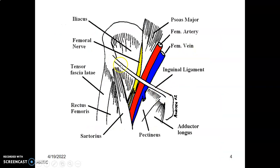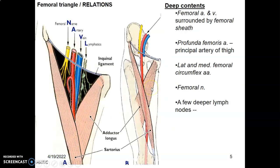The inguinal ligament runs from the anterior superior iliac spine to the pubic tubercle. Sartorius forms the lateral border and adductor longus forms the medial border. From lateral to medial: femoral nerve, femoral artery, vein, and lymphatics. The nerve is not within the femoral sheath; the rest are within the femoral sheath.